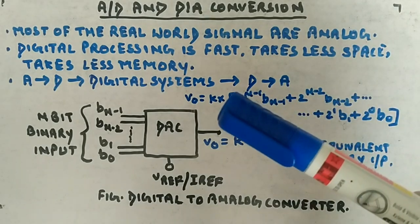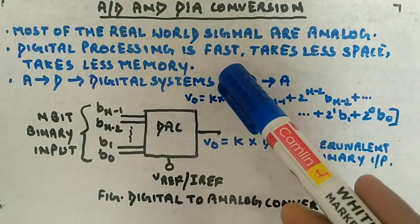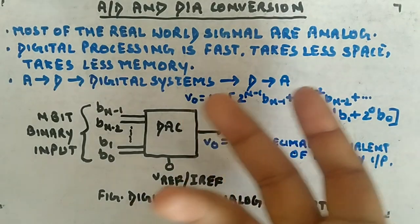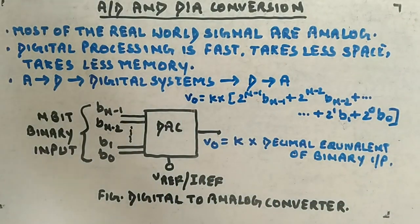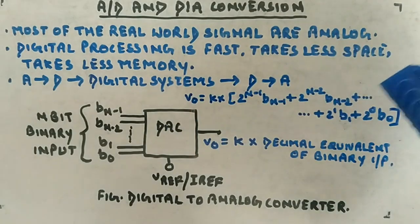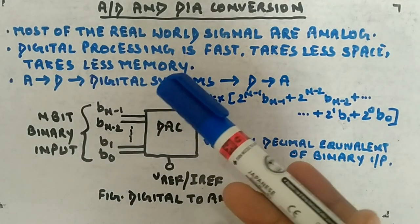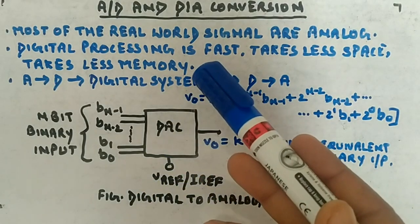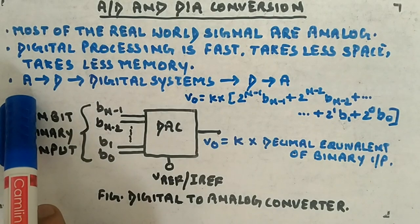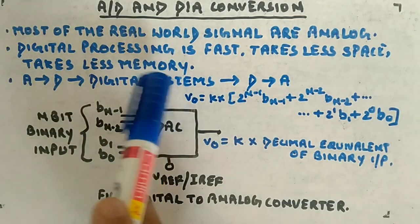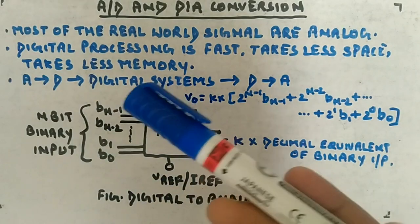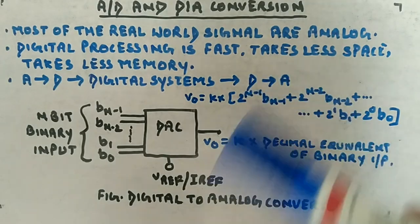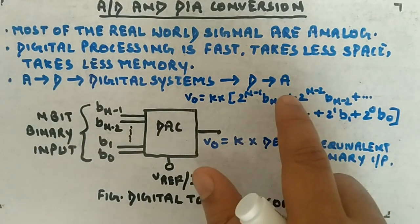The benefit of digital processing is that it is fast — it takes less time to process a signal in digital form. It also takes less space, so digital systems are very small, and it requires less memory to save data compared to analog. So you convert the analog signal into digital, use digital systems for processing, and convert the output back into analog.